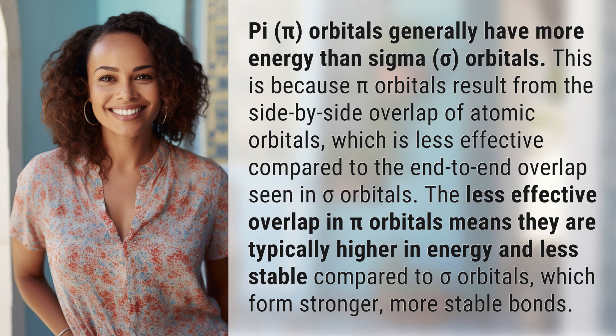The less effective overlap in pi orbitals means they are typically higher in energy and less stable compared to sigma orbitals, which form stronger, more stable bonds.